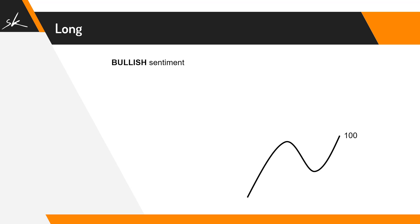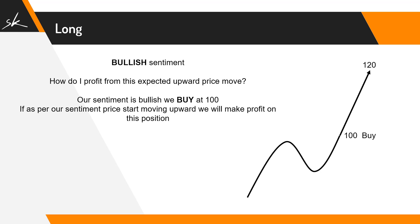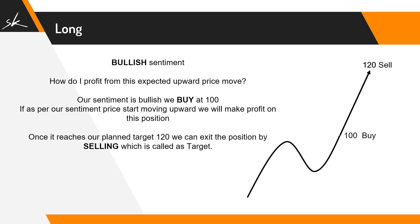Let's imagine a stock is trading at 100 rupees as of now, and I'm expecting the prices to move up to 120. Because I'm expecting prices to move up, the logical action would be to buy it at 100 rupees, so that once prices move up, I can sell it at a higher price and make some money. Therefore, if prices start moving upward, we will be in profit. Once it reaches our planned exit of 120, we can exit that position by selling it.